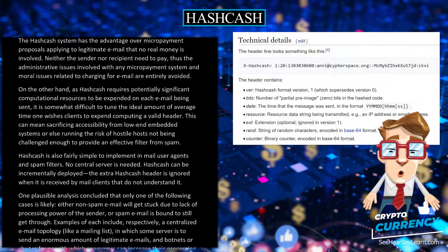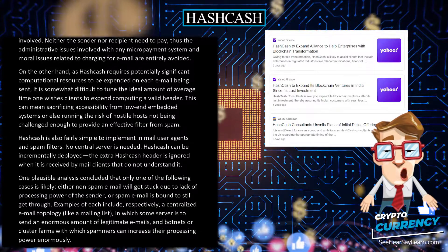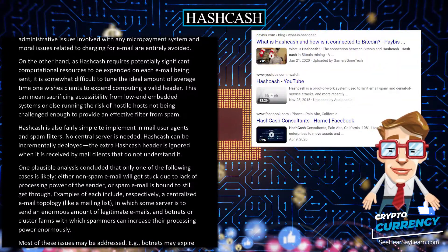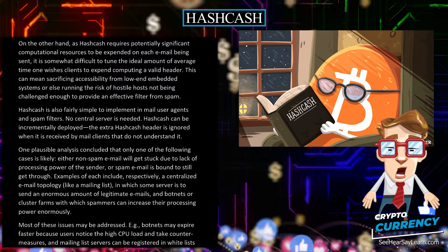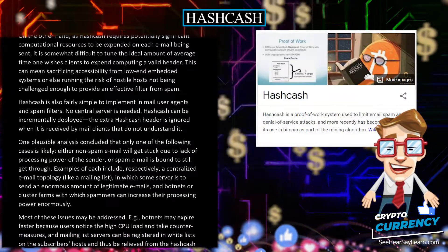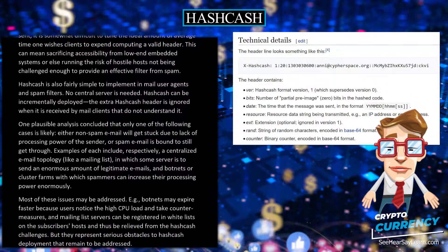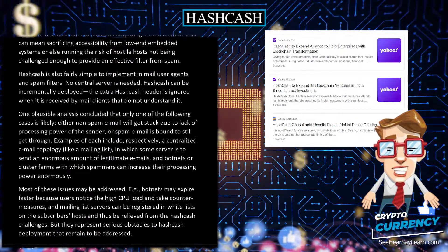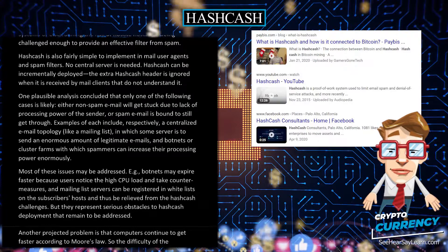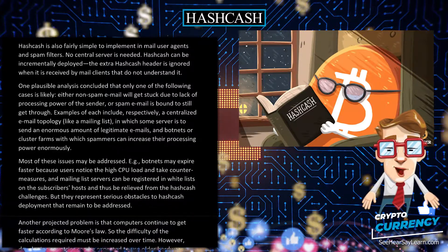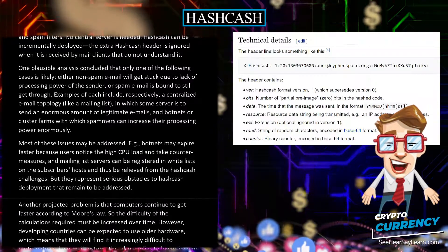One plausible analysis concluded that only one of the following cases is likely: either non-spam email will get stuck due to lack of processing power of the sender, or spam email is bound to still get through. Examples include, respectively, a centralized email topology like a mailing list in which some server must send an enormous amount of legitimate emails, and botnets or cluster farms with which spammers can increase their processing power enormously. Most of these issues may be addressed. For example, botnets may expire faster because users notice the high CPU load and take countermeasures, and mailing list servers can be registered in whitelists on subscribers' hosts and thus be relieved from the hashcash challenges. But they represent serious obstacles to hashcash deployment that remain to be addressed.